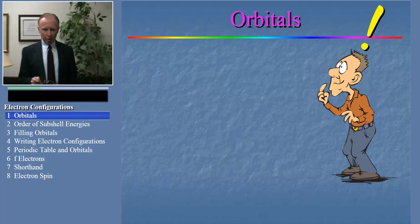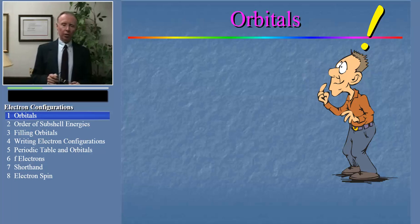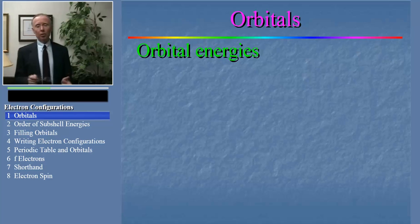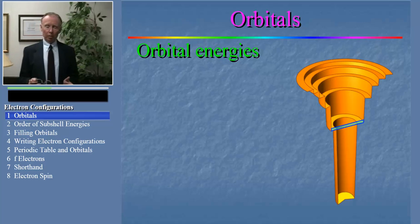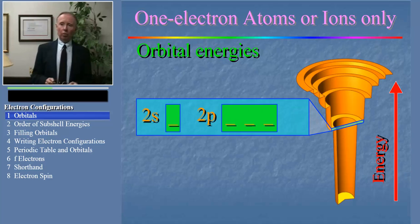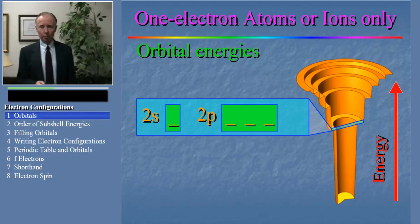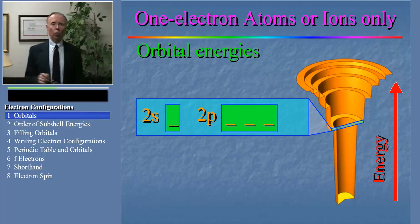Now the principal difference between the electron orbitals in one-electron atoms versus those in multi-electron atoms has to do with their energies. Specifically, as you'll recall, in one-electron atoms, all orbitals with the same principal quantum number have the same energy. For example, the 2s waveform or orbital has the same energy as the set of 2p orbitals. But this isn't so with atoms containing more than one electron.